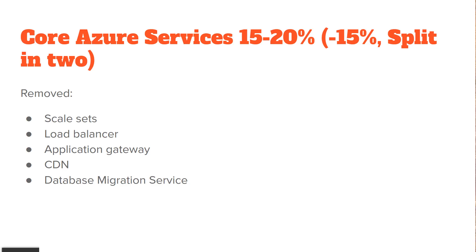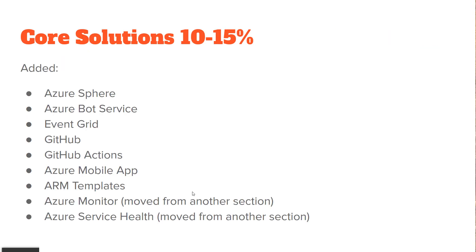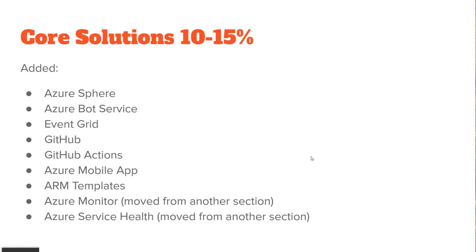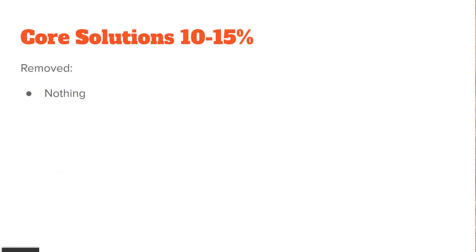They're removing some of the more advanced features like load balancing, application gateway, content delivery network, database migration, and VM scale sets. This next part is a new section — the last section was split into two. It's called core solutions, worth 10 to 15%, and they've added quite a lot. It used to just cover internet of things, but now they've added Azure Sphere into the IoT section, Azure Bot Service, GitHub and GitHub Actions. Microsoft owns GitHub now, and GitHub Actions is an integration between GitHub and Azure. The Microsoft Azure mobile app is now covered by this exam, as well as the concept of ARM templates — Azure Resource Manager templates. Nothing has been removed from this section.